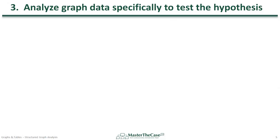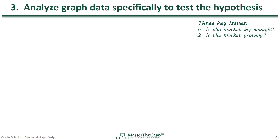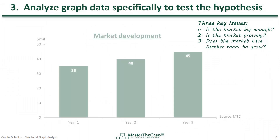The third step in structured graph analysis is to analyze graph data, specifically to test the hypothesis. Recall that we have already defined three key issues to guide our graph analysis: one, is the market big enough? Two, is the market growing? And three, does the market have further room to grow? So let's now bring up our graph.